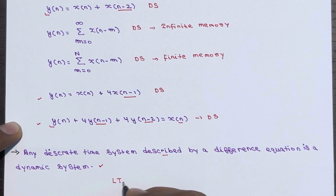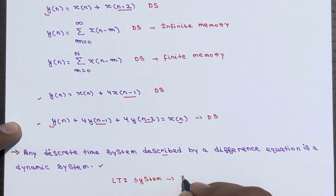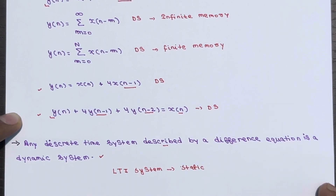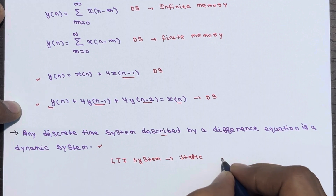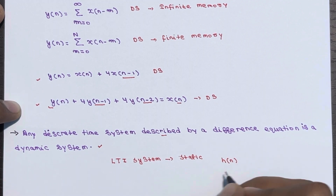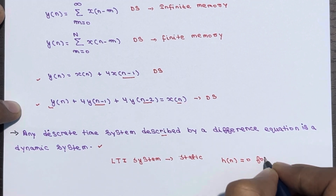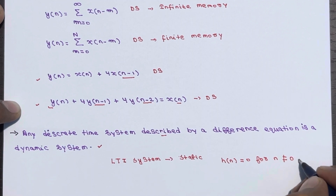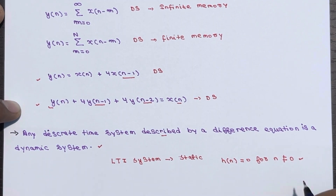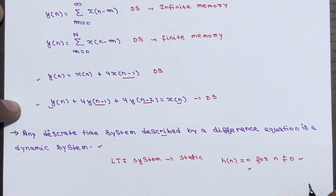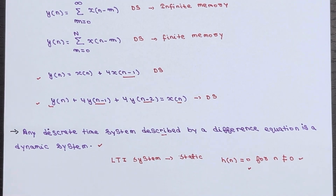On the flip side, a discrete time LTI system is considered memoryless or static if its impulse response h(n) is 0 for n not equal to 0. In simpler terms, if the impulse response does not have any significant value outside of n = 0, we are dealing with a static system. If the impulse response is not identically 0 for n not equal to 0, then the system is called a dynamic system or a system with memory.